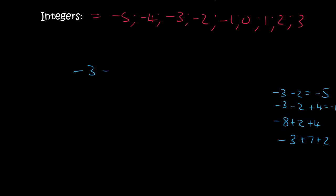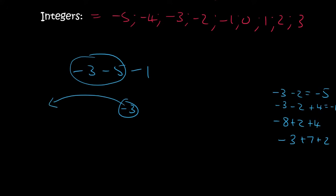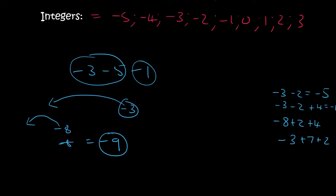And the last one is minus 3 minus 5 minus 1. So minus 3 minus 5 — minus 3 is over here, and if you minus, you go to the left, and 3 and 5 gives you 8, so this would be minus 8. Then you go another one backwards because it's minus, and so after minus 8 you would get minus 9. All right guys, so there we go. You need to practice your integers, and as you practice, they become easier to work with.